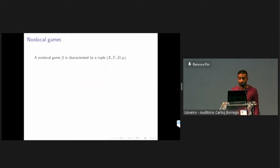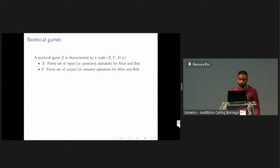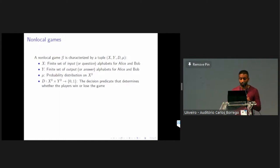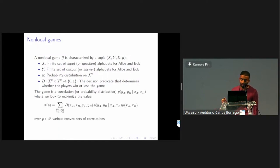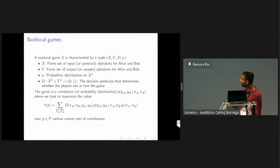A non-local game is characterized by four things: the input set from which they draw inputs; the set of outputs for Alice and Bob; a probability distribution on the set of inputs; and a decision predicate that takes all inputs and outputs and returns zero if they lose and one if they win. You can think of a non-local game as a correlation P(yA, yB | xA, xB), and we look to maximize the value of the game — the sum over all outputs and inputs of the decision predicate times the probability of those outputs given the inputs, times the probability of those inputs.